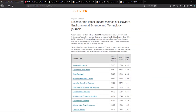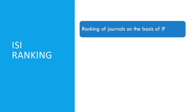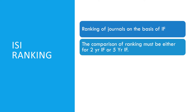Now moving to ISI ranking — the ranking of journals on the basis of impact factor. When we rank journals this way, it is called ISI ranking. When comparing rankings, the comparison must be either for the two-year impact factor or for the five-year impact factor consistently.